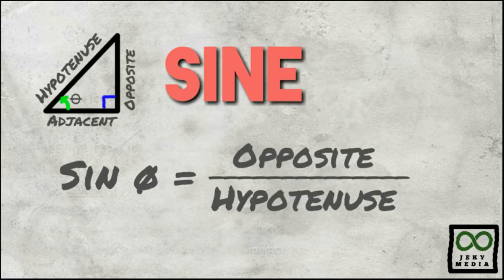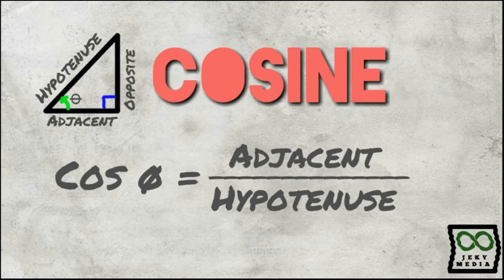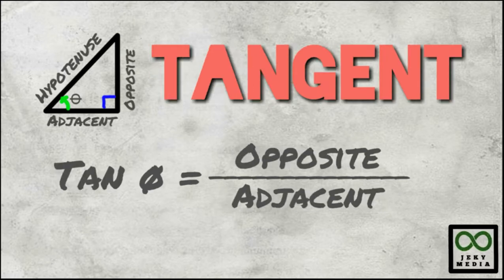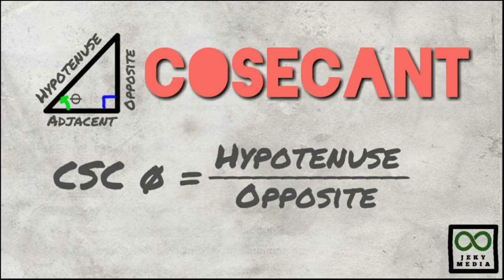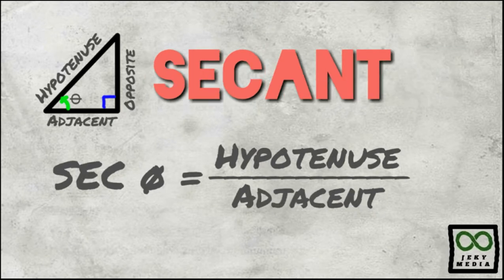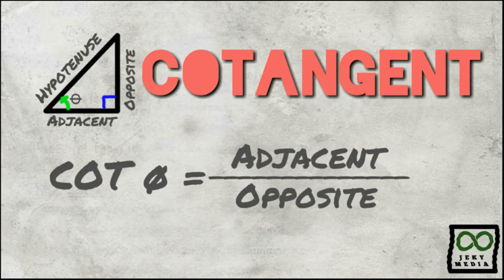The sine function: sine theta is the ratio between the opposite side and the hypotenuse. The cosine function: cosine theta is the ratio between the adjacent side and the hypotenuse. The tangent function: tangent theta is the ratio between the opposite side and the adjacent side. The cosecant function: cosecant theta is the ratio between the hypotenuse and the opposite side. The secant function: secant theta is the ratio between the hypotenuse and the adjacent side. The cotangent function: cotangent theta is the ratio between the adjacent side and the opposite side.